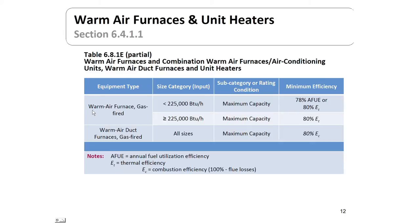There is a table on efficiencies for heaters — in this case, warm air furnaces and unit heaters. We have gas-fired warm air furnaces and oil-fired ones. Basically the efficiency requirement is around 78 to 80 percent. AFUE means the annual fuel utilization efficiency; if it says ET, that's simply the thermal combustion efficiency of the unit itself.